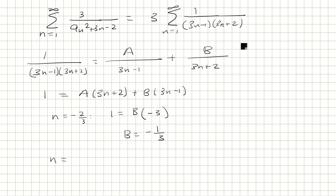And then when is 3n minus 1 equal to 0? That's when n is equal to 1 third. So we have 1 equals, well, 3 times 1 third is 1, plus 2 is 3. So A is 1 third.